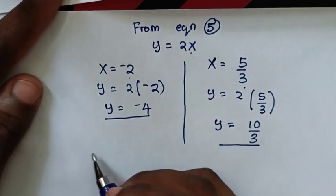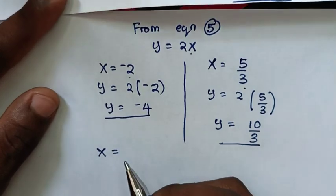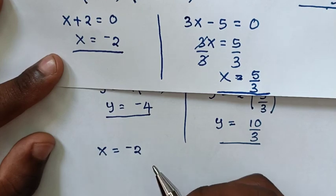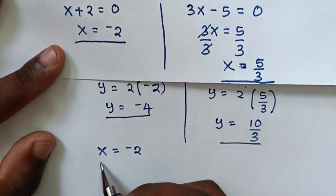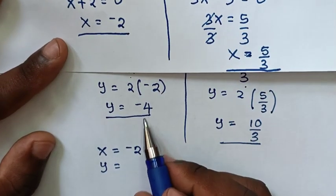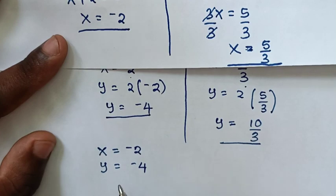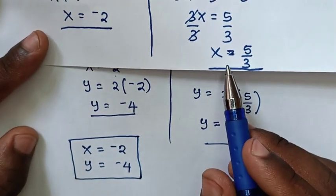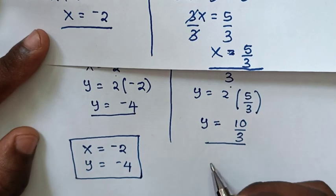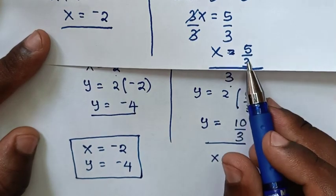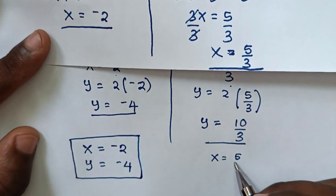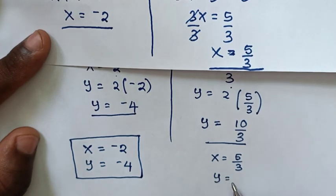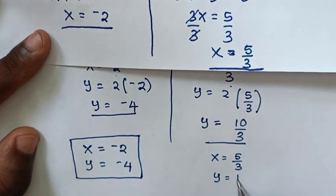Therefore the solutions for our problem: x is equal to negative 2 and y is equal to negative 4. And another solution is x is equal to 5 over 3 and y is equal to 10 over 3.